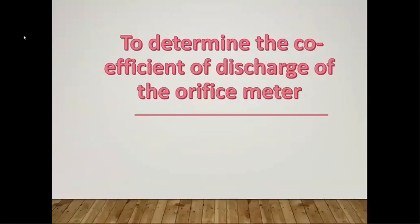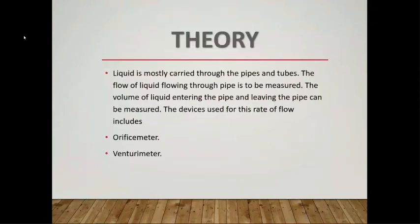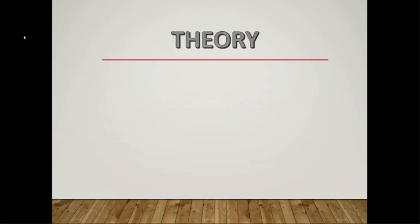We will determine the coefficient of discharge of the orifice meter. Liquid is mostly carried through pipes and tubes, and the flow of liquid through the pipe is to be measured. The volume of liquid entering and leaving the pipe can be measured. The devices used for measuring the rate of flow include the orifice meter and venturi meter. The orifice meter and orifice plate are devices used for measuring the volumetric flow rate.